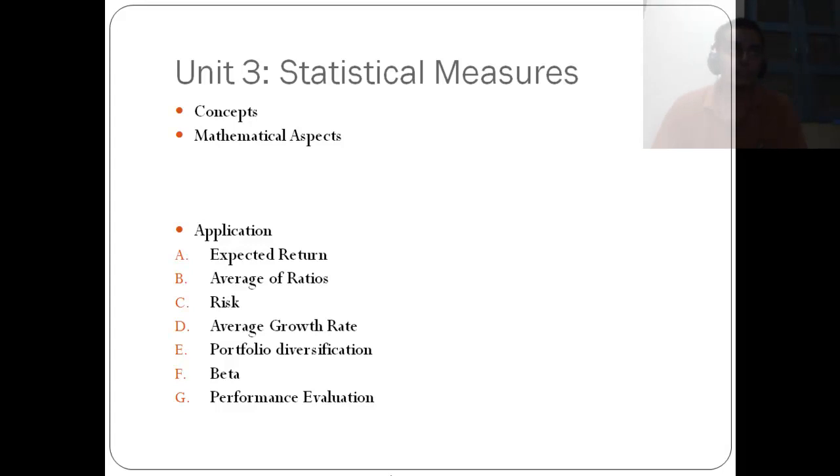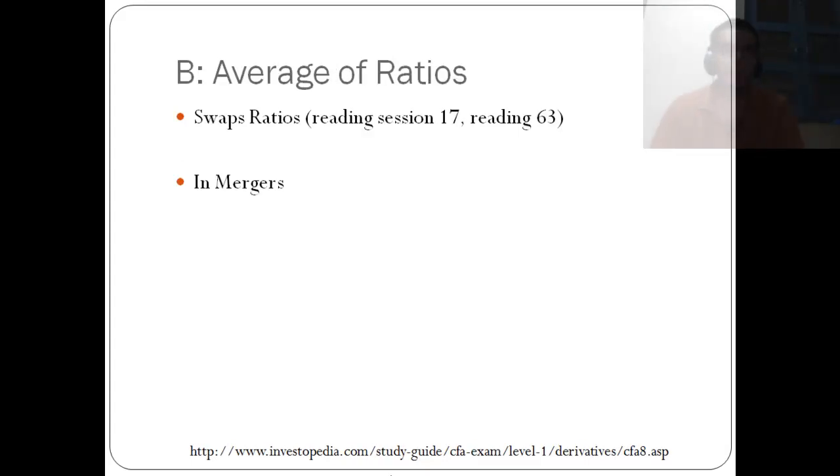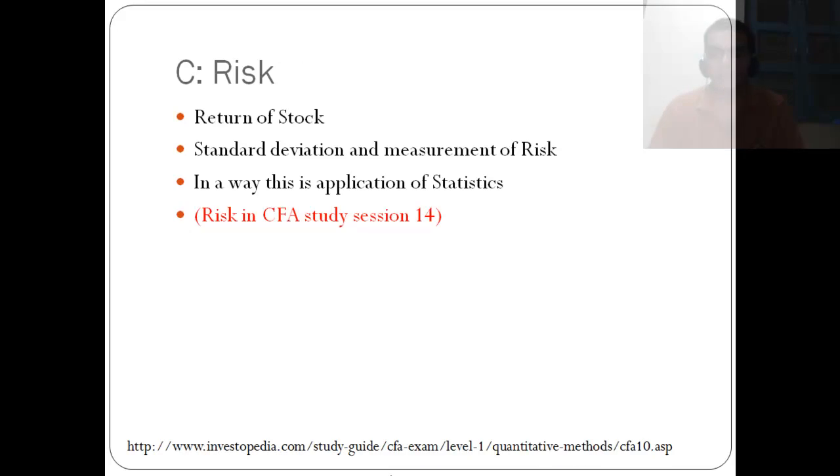The third unit talks about the statistical measures, and it is one of the biggest units of the four. It talks about expected return, average of ratios, risk, average growth, portfolio diversification, beta, and performance evaluation. So, expected return is about the stock and it is quite simple, straightforward application. The average of ratios has no much math involved.